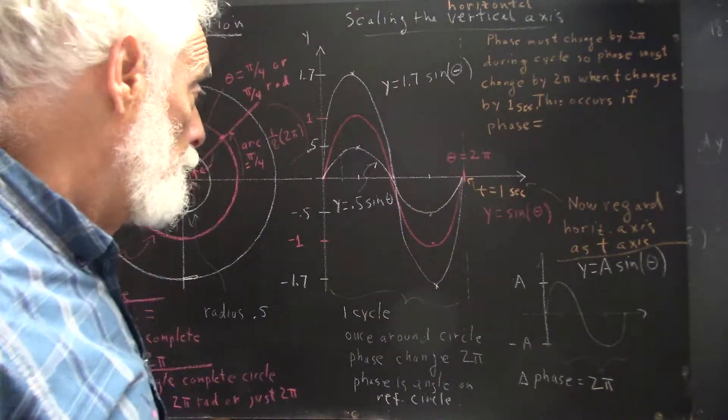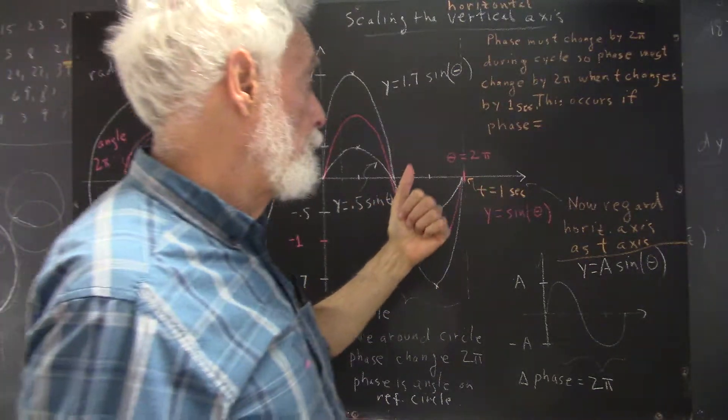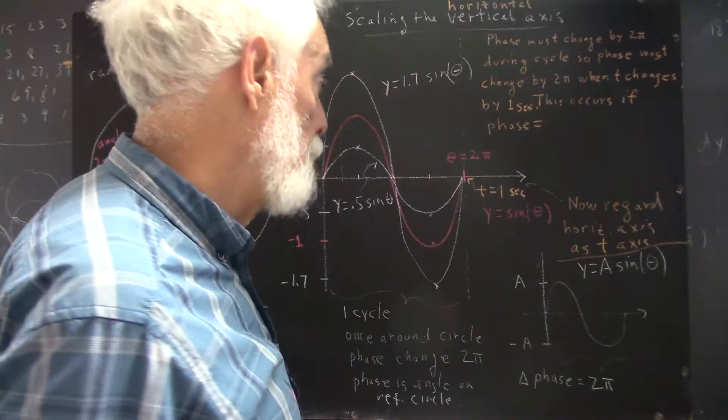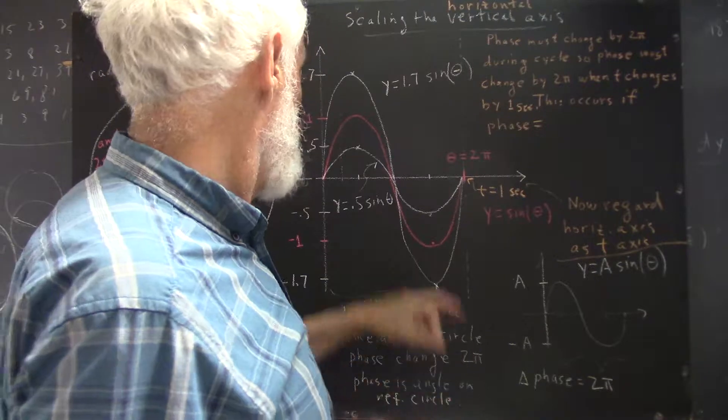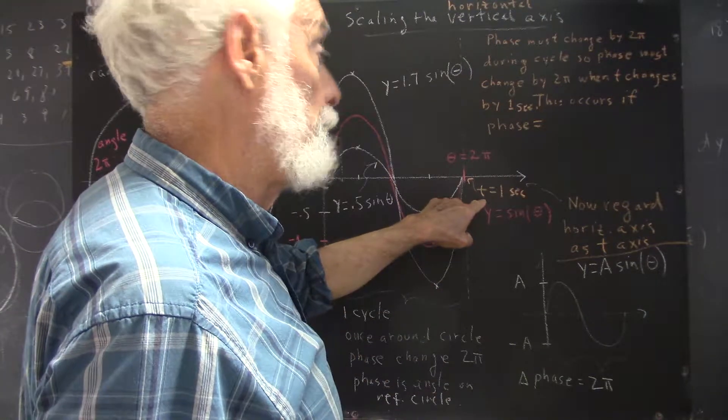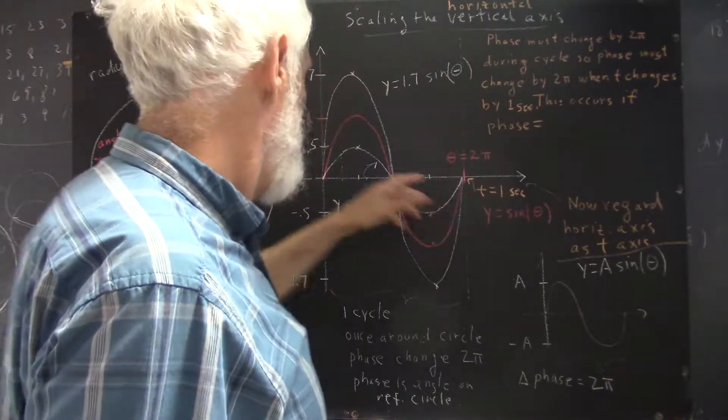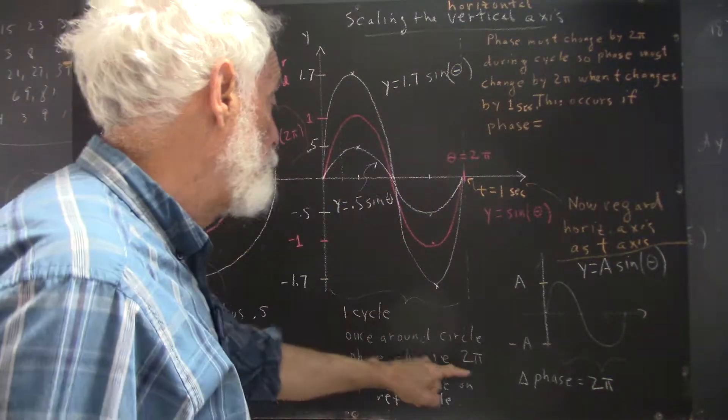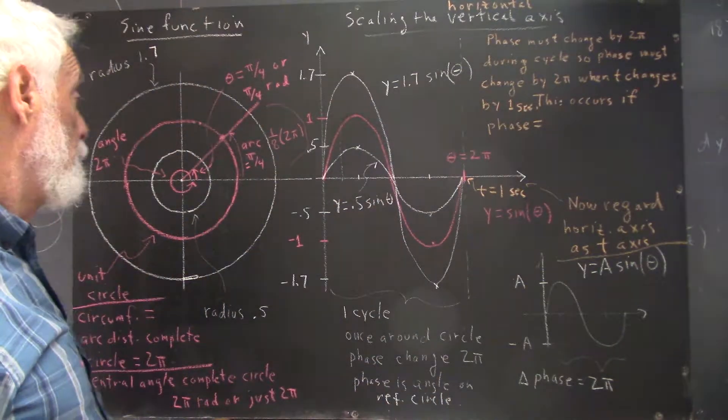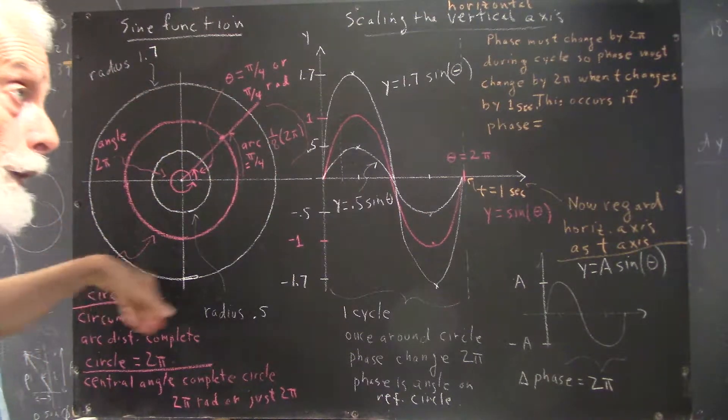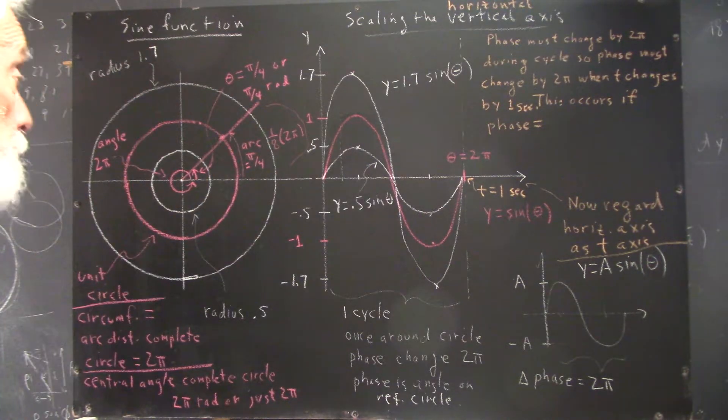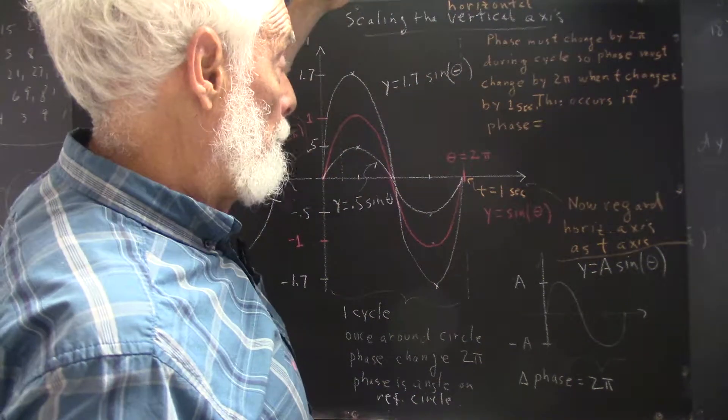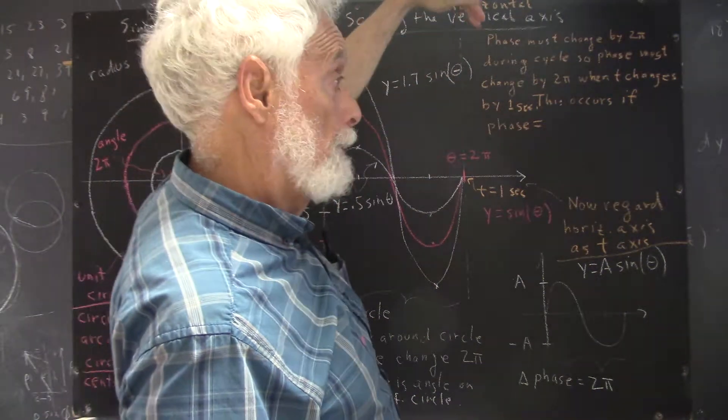How are we going to write the function corresponding to this model? We can't use y equals sine of theta, or we can if we let theta equal the right thing. But we can't let y just equal the sine of t because the phase change during the complete cycle has to be 2π. In other words, you have to go all the way around the circle in a complete cycle.